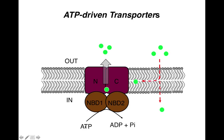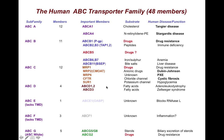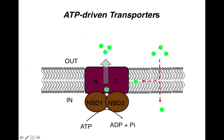This is the general schematic of a transporter. There are two transmembrane domains and two nucleotide binding domains which are located in the cytoplasm. ATP binds and hydrolyzes at the nucleotide binding domains and provides the power to transport substrates out of the cell.